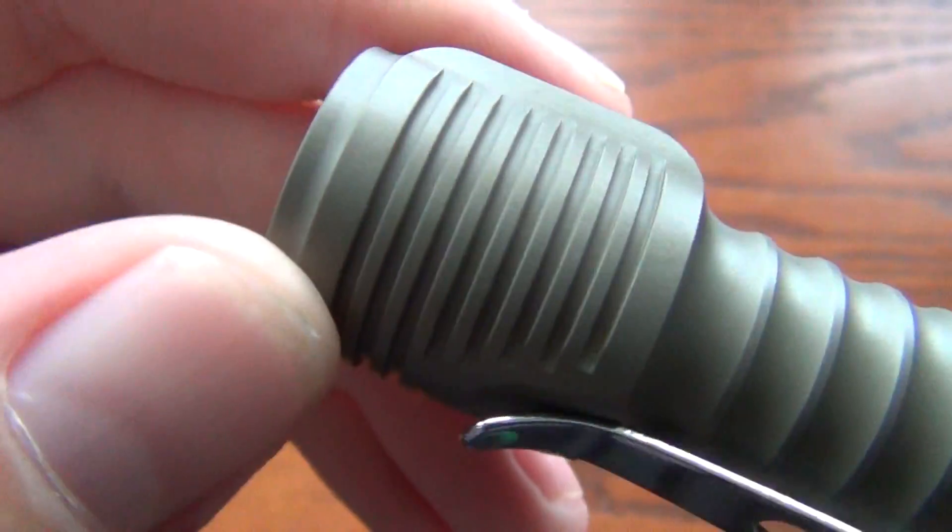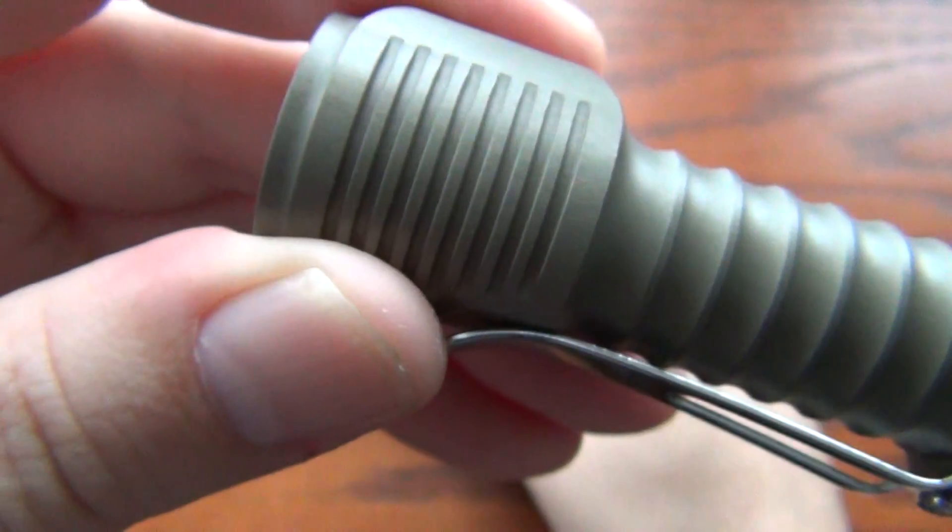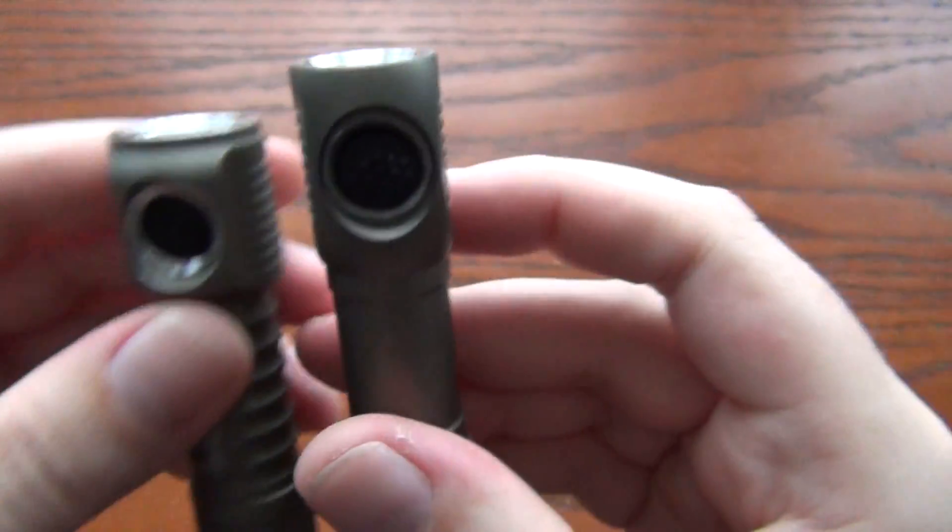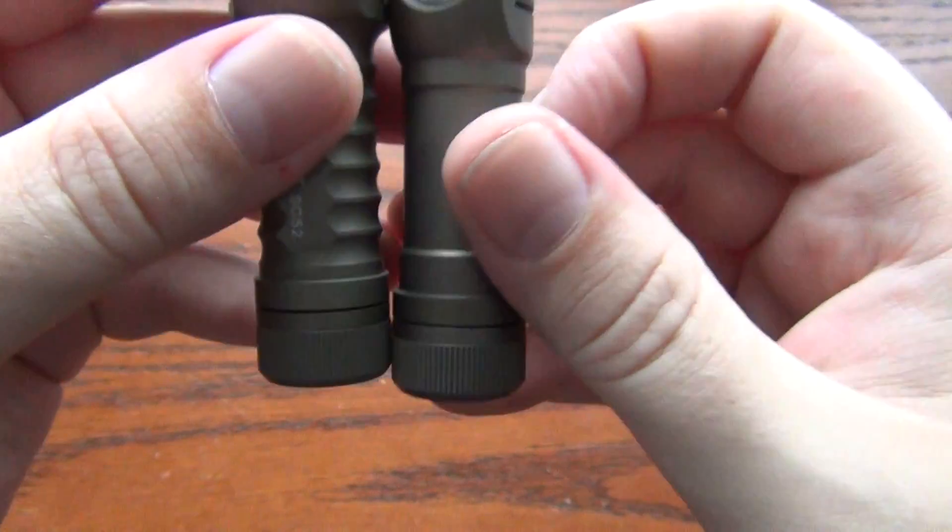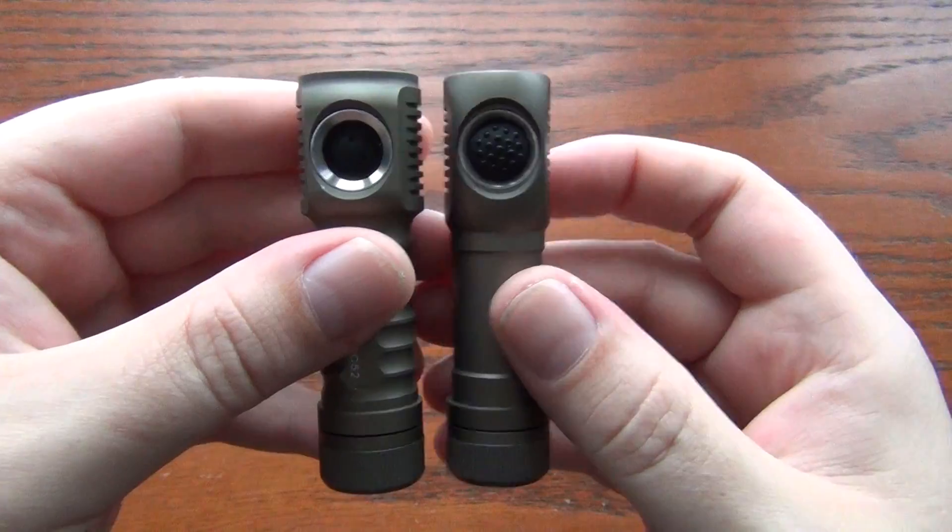The cooling fins aren't as deep on this one. And I assume that's because there's less space. You can see the head is bigger. Overall the light is actually just a little bit smaller. This has an XML in it.